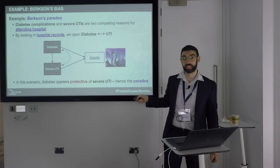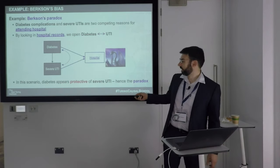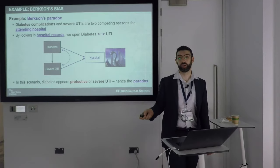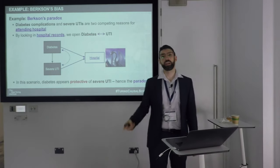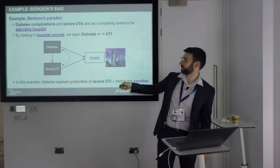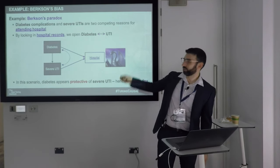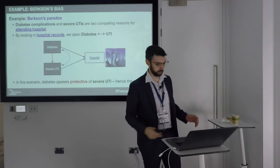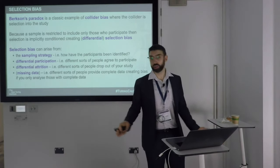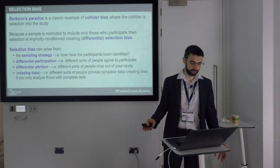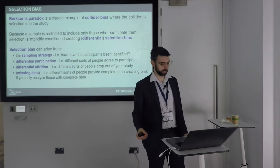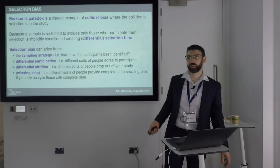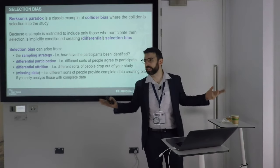Immediately, by looking in those records we will have a conditional dependency between diabetes and severe urinary tract infection — there's nothing we can do because that is the nature of the data. According to the Bertson's bias thought experiment, we would expect to see a protective effect of diabetes on severe urinary tract infection, because UTI is a very common reason for going to hospital, so if you have diabetes there are plenty of other reasons you could be there. Bertson's paradox is a classic example of collider bias where the collider is selection into the study.